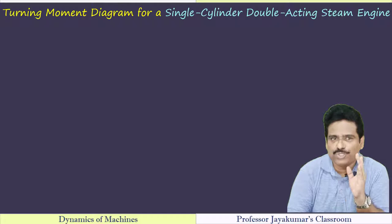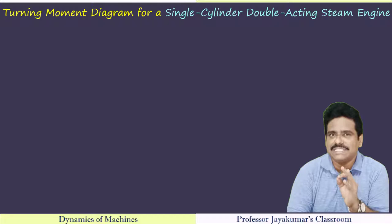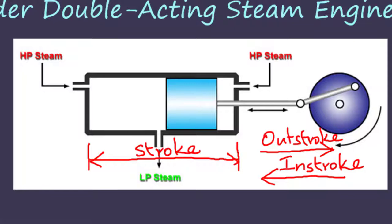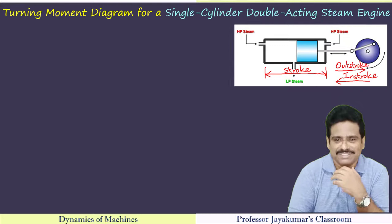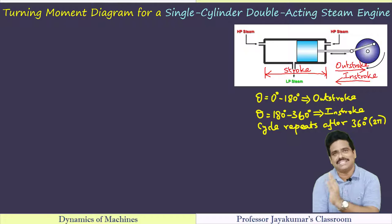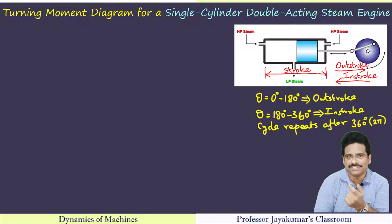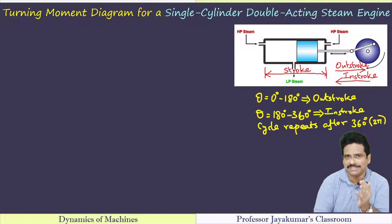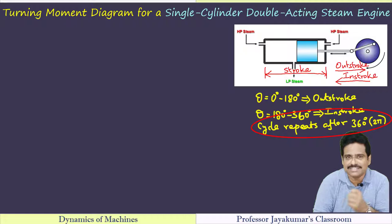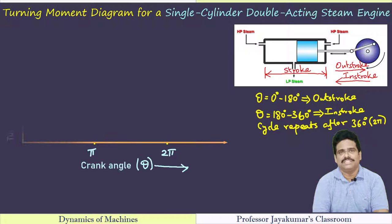Let us now study the turning moment diagram in detail. I am going to draw a turning moment diagram for a single-cylinder double-acting steam engine. Steam exerts thrust on the piston, which results in the rotation of the crank and the crankshaft. When the piston moves from one extreme end to another, the crank covers half a rotation — so 0° to 180° is the out-stroke, and the in-stroke follows from 180° to 360°, and the cycle keeps repeating. The cycle repeats after every 360° of crank rotation, or 2π radians.